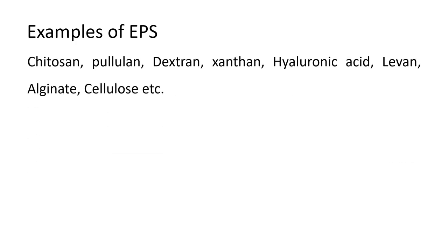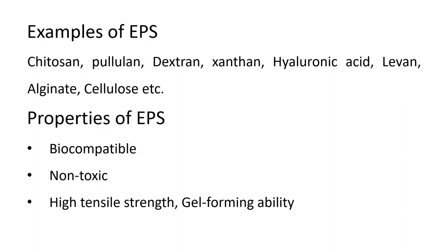Here are a few examples of EPS: Chitin, Pullulan, Dextran, Xanthan, Hyaluronic Acid, Levan, Alginate, and Cellulose are some of them.